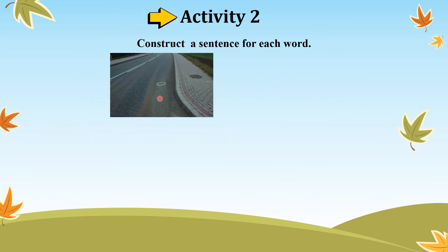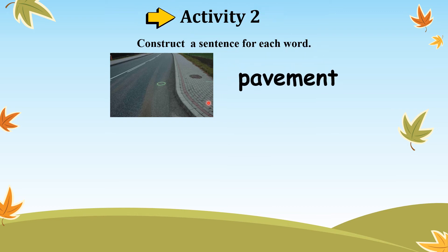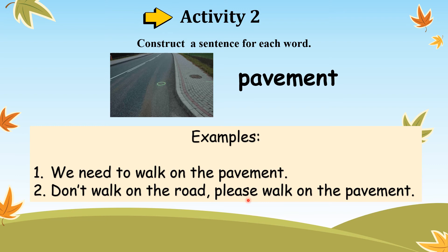Next one — what do we call this thing? We need to walk on this, not on the road. It is a pavement. Let's study the example sentences: 'We need to walk on the pavement.' 'Don't walk on the road. Please walk on the pavement.'